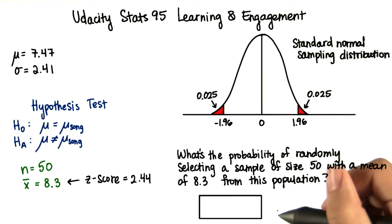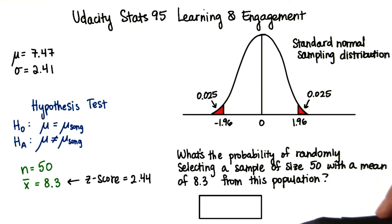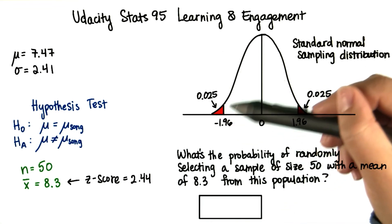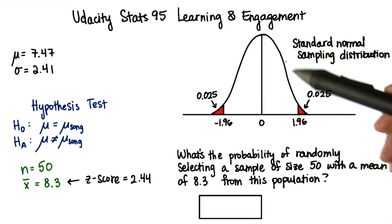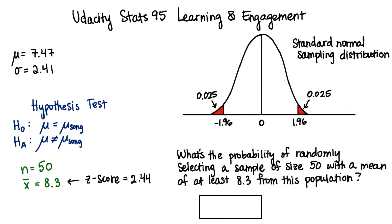Write it in terms of a proportion. This is just what you did in lesson seven. You calculated where the sample mean falls on this distribution of sample means, and then you used the z-table to find the probability greater than that value.